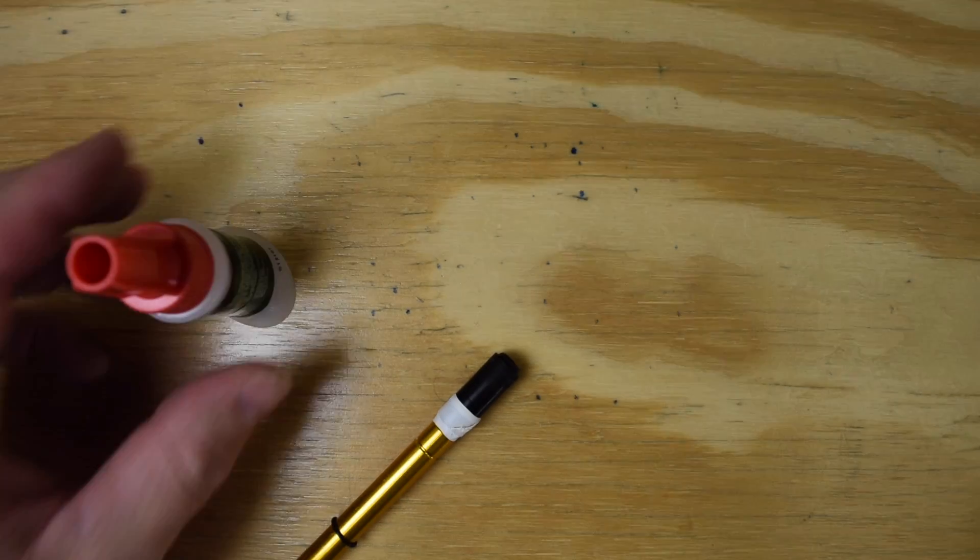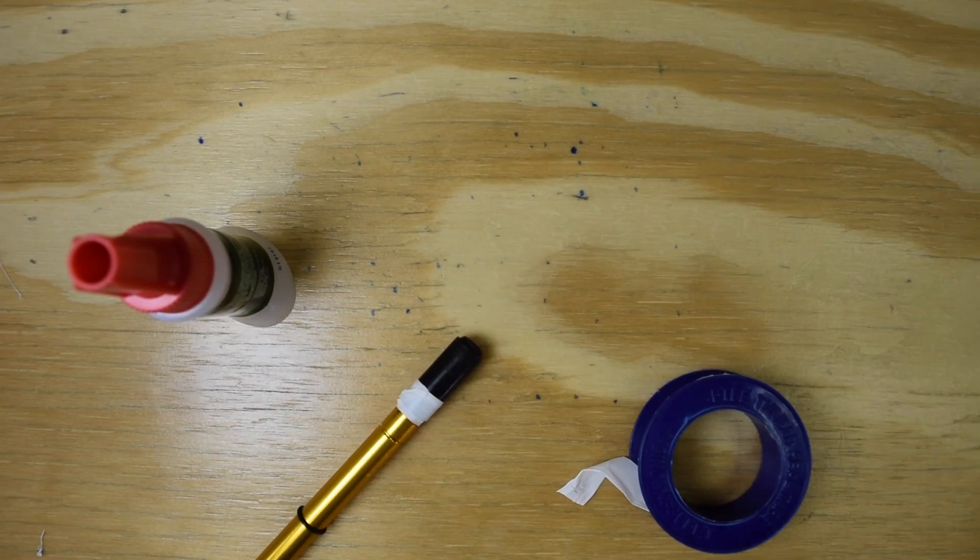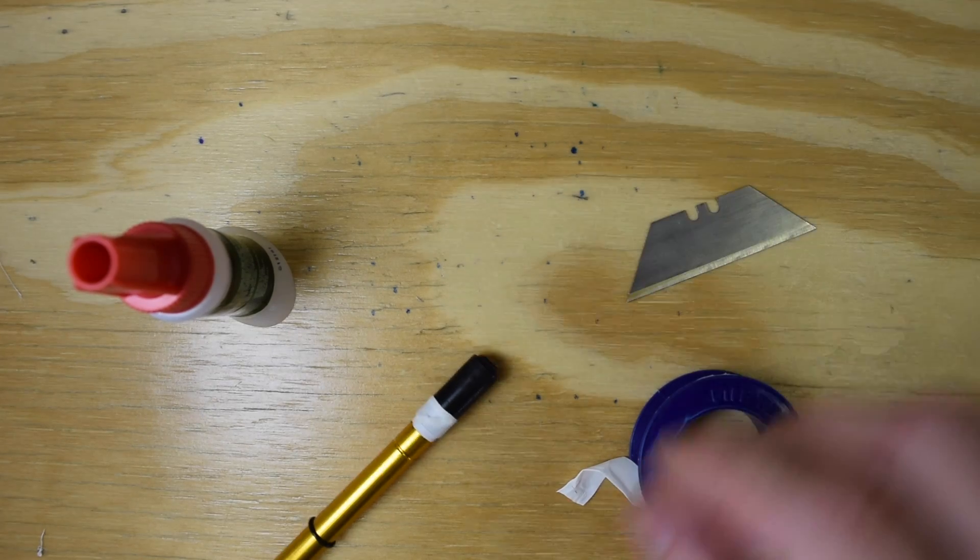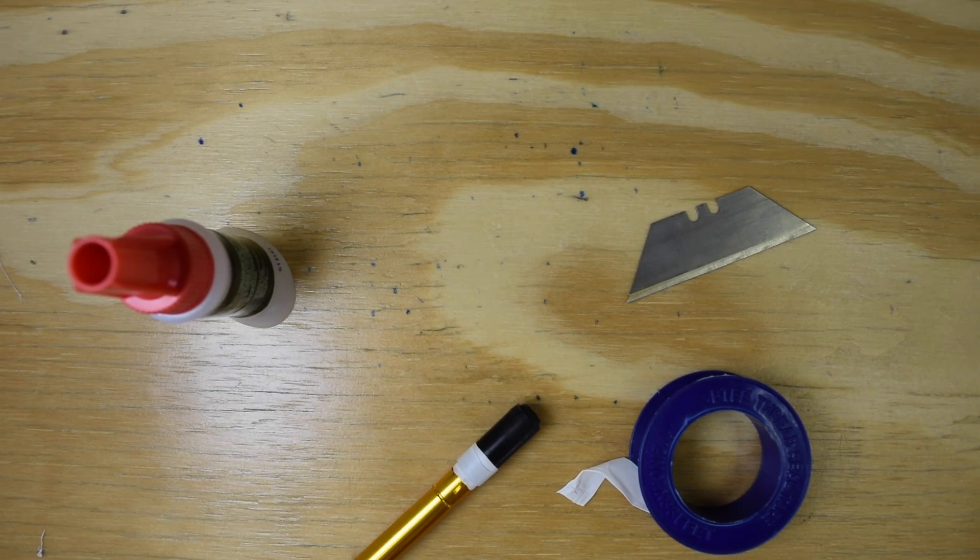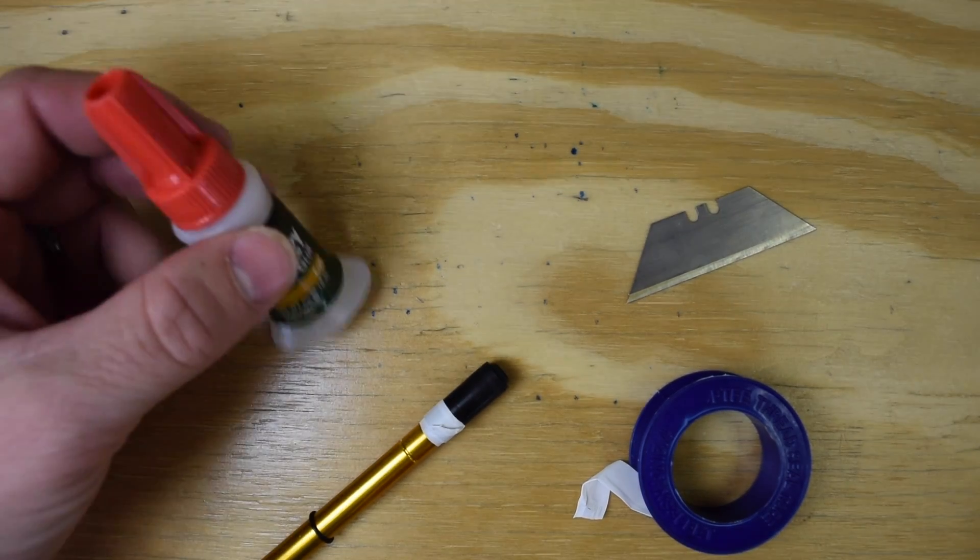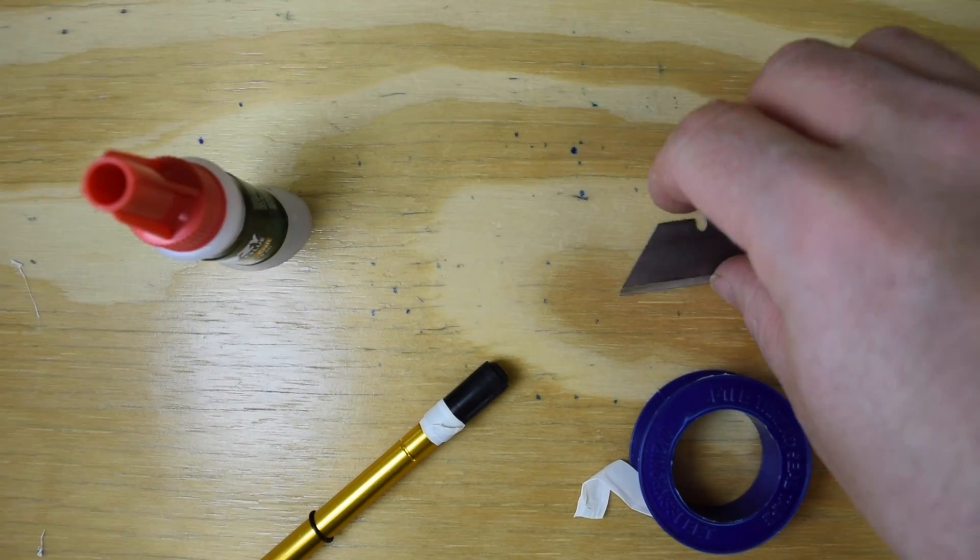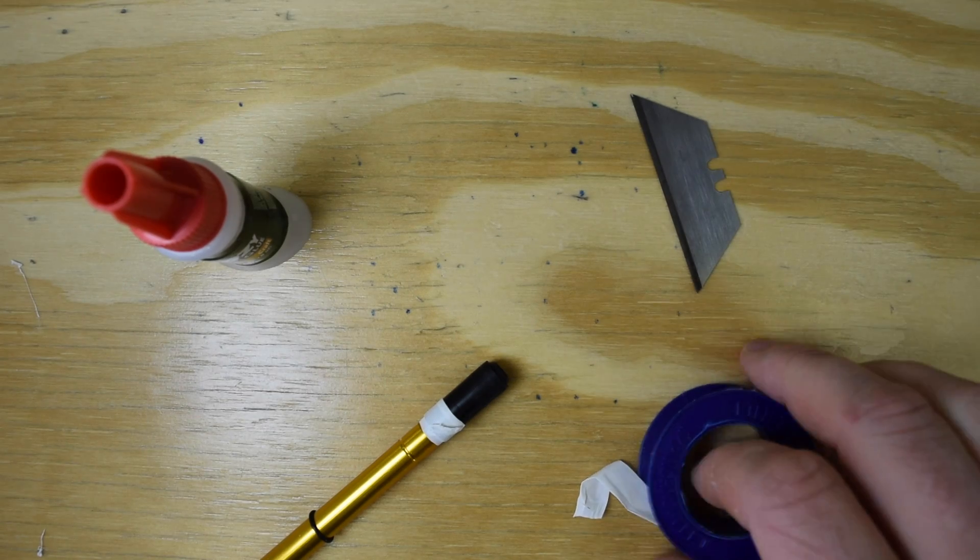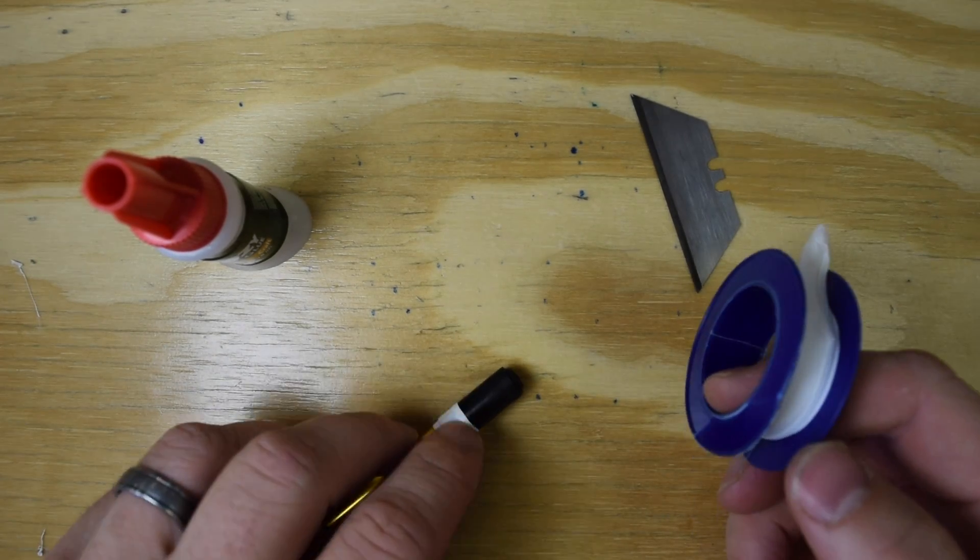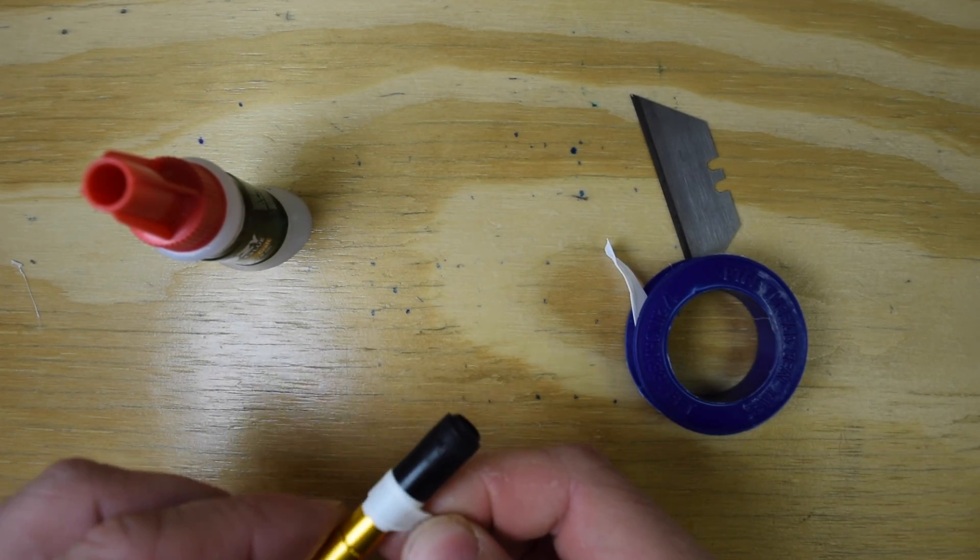We have our hop-up. It's just a stock ICS hop-up. It's pretty soft. If you drop a BB through, it goes through pretty easily. We have super glue with brush style applicator. You definitely want the brush style. It makes it a lot easier. Nice sharp razor blade and Teflon tape. So we're going to jump right in here and show you how it's done.